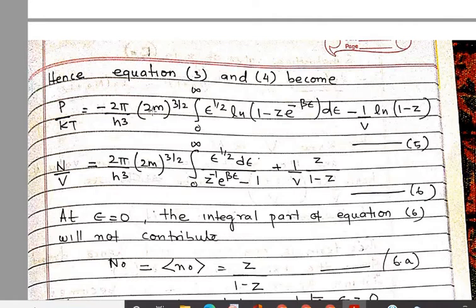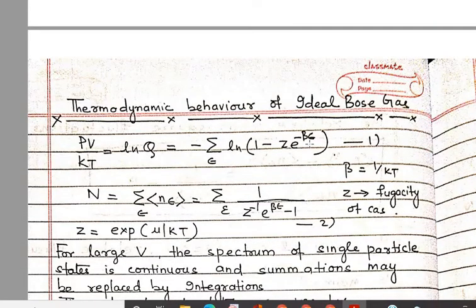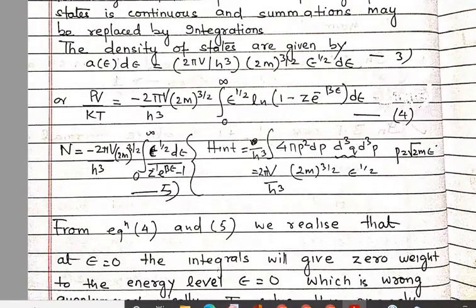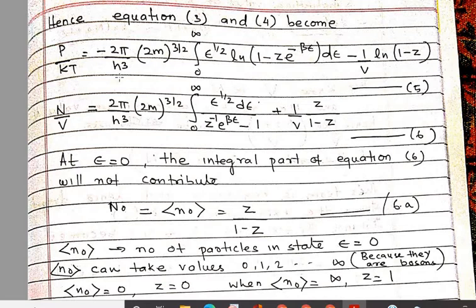When ε = 0, e^(−βε) = 1, so the log term becomes ln(1 − z), and 1/V·ln(1 − z) survives. This term does not go to zero, which is why we use summation at ε = 0 — if we had used integration, the whole term would vanish, which is not correct. For the integration term, we write the limits as 0 to ∞ because ε = 0 does not contribute to the integral, so technically it starts from ε = 1 but mathematically it is more convenient to write 0 to ∞ and the contribution at zero is zero. Therefore, the summation term captures the ground state contribution.